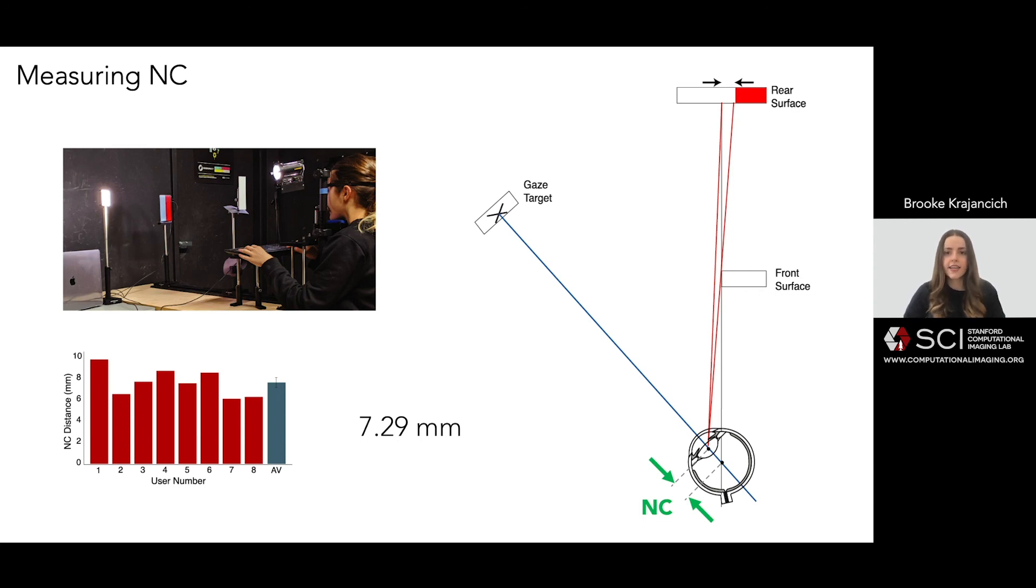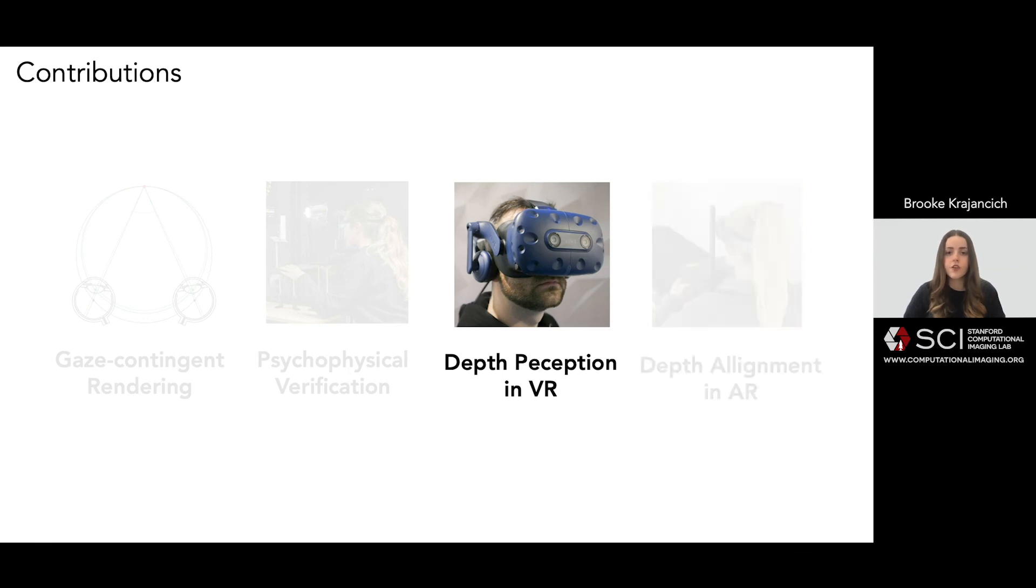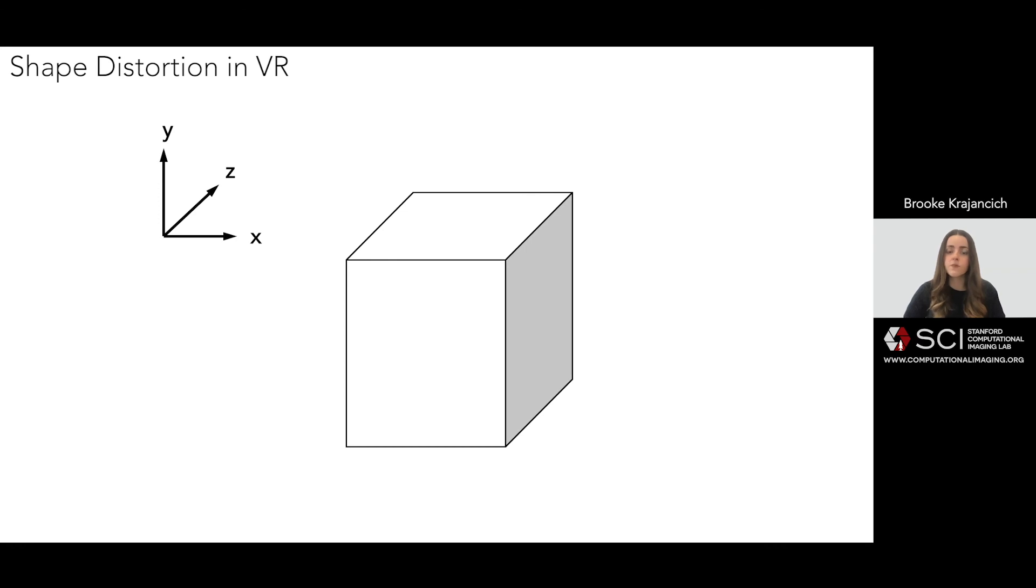We used this value to test our gaze contingent stereo rendering approach with two user experiments, the first of which used a Vive Pro VR headset to investigate the effect of depth rendering on shape distortion. This is based on the hypothesis that if depth rendering is in fact being distorted by conventional stereo rendering, then this will distort the aspect of a 3D shape.